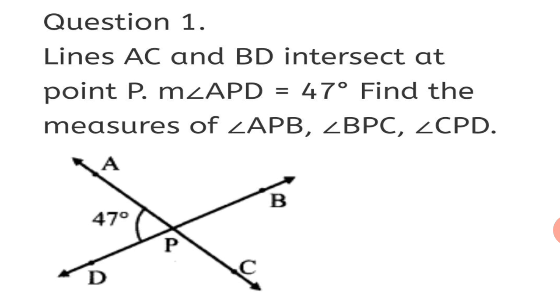Let's solve Practice Set 20, Question 1. Lines AC and BD intersect at point P. You can see in the figure that measure of angle APD equals 47 degrees, as shown. Find the measures of angle APB, angle BPC, and angle CPD — we have to find the other three angles.